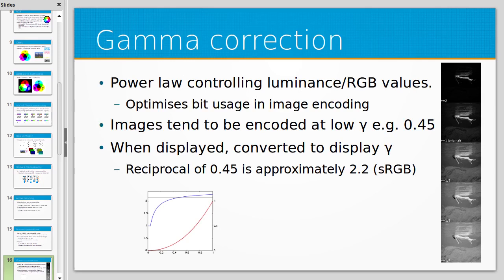Now I'll talk about gamma correction. This is a power law that controls luminance and RGB values, and it optimises the bit encoding. We tend not to see much detail in low-light situations, so you don't need to store many bits to represent very dark images. The idea of gamma correction is that you give brighter colours effectively more bits, so we can see more gradations in brightness at the higher end of a colour channel, while allowing quite broad gradations at the low end.